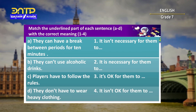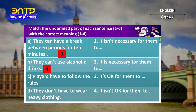Time is up. Let's compare and check your answers. Sentence A: They can have a break between periods for 10 minutes — that is, it's okay for them to have a break between periods for 10 minutes. B: They can't use alcoholic drinks — it isn't okay for them to use alcoholic drinks. C: Players have to follow the rules — it is necessary for them to follow the rules. And the last one: They don't have to wear heavy clothing — it isn't necessary for them to wear heavy clothing. Great job!